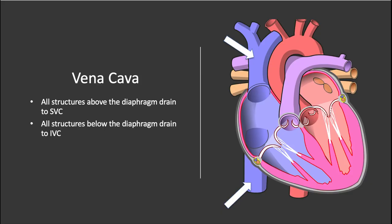The great vessel we have to talk about here is the vena cava. The aorta was what we were concerned about when talking about arteries. The vena cava is the main vessel returning blood to the heart, and there are actually two divisions. All structures above the diaphragm drain to the superior vena cava, and all structures below the diaphragm drain into the inferior vena cava, both emptying into the right atrium.